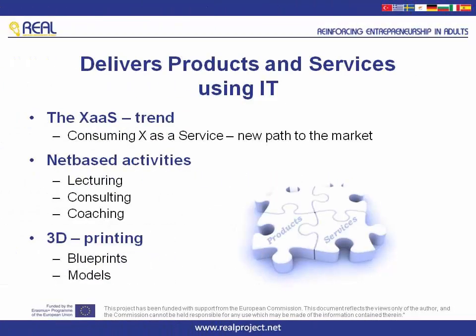The last five years, the trend of something as a service is very clear. Things that were sold as products have turned into service-selling models. Software as a service was the start, but now we can see it in a number of domains. Not least, 3D printing has turned businesses upside down, selling blueprints and design tools and letting customers produce their own products. Turning from an industrial period into a knowledge-based economy has also opened up many new ways of selling knowledge as a service.